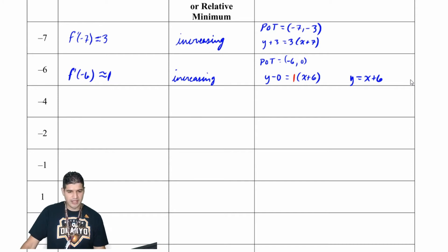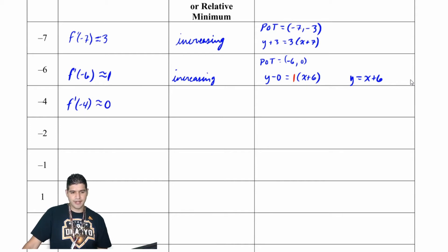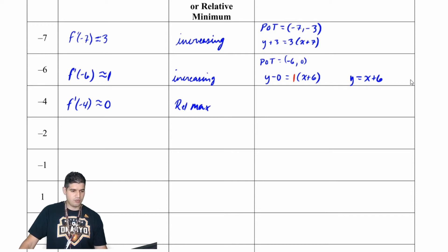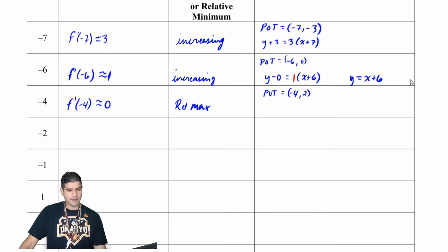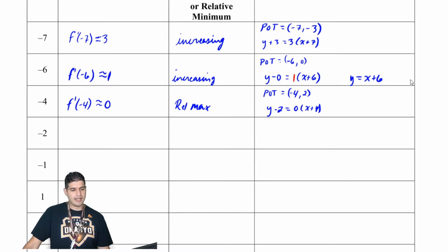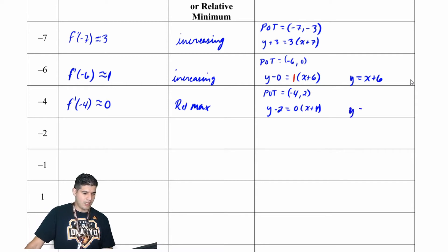At x equals negative 4, f prime is approximately 0, and I notice this is a relative maximum. My point of tangency is negative 4 comma 2, so the equation is y minus 2 equals 0 times x plus 4, which simplifies to y equals 2.